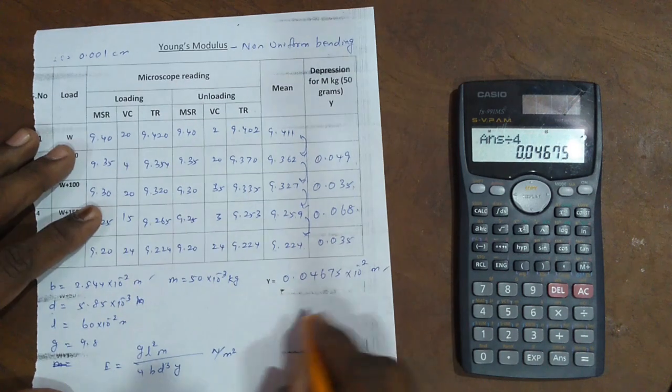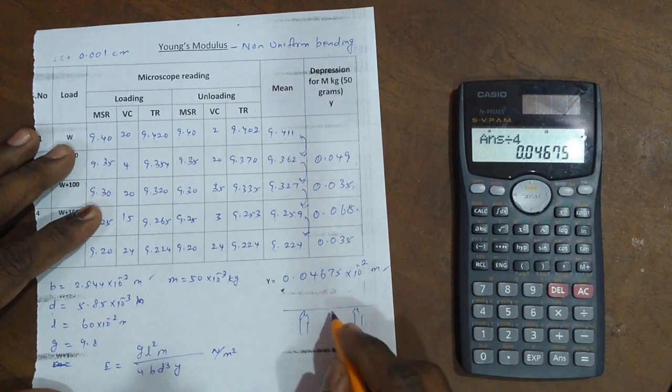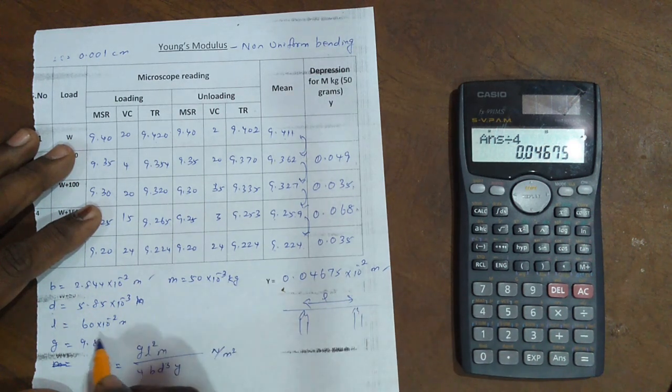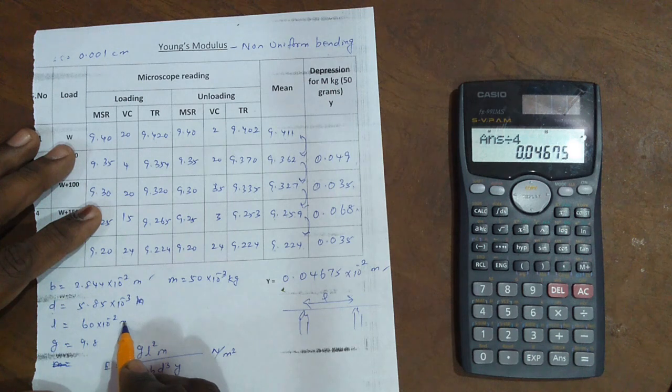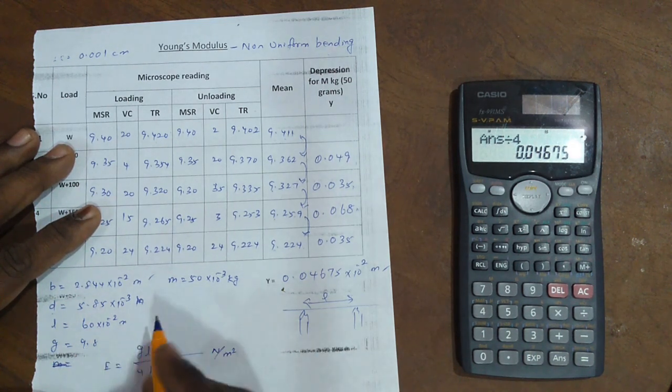The length of the bar, you already know that. Distance between the two knife edges: the answer is 60 centimeters. Then gravity, g is equal to 9.8.